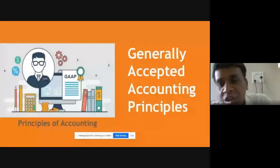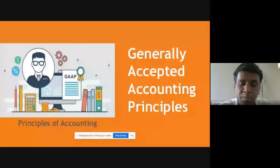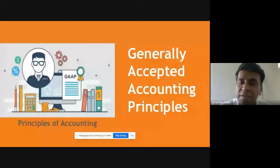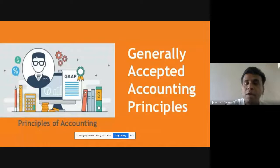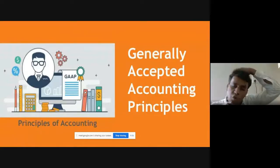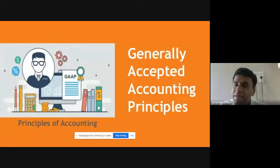The topic we are discussing is Generally Accepted Accounting Principles. There are four sub-topics in topic number one, and the first one is GAAP. In short we call it GAAP — G for Generally, A for Accepted, A for Accounting, and P for Principles.